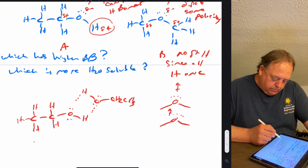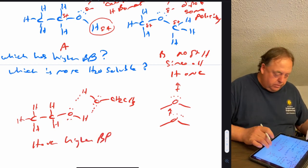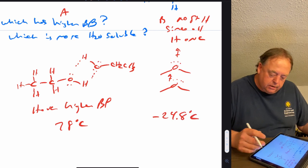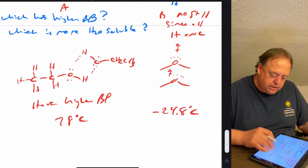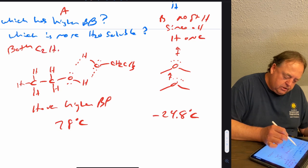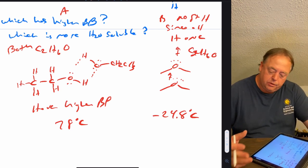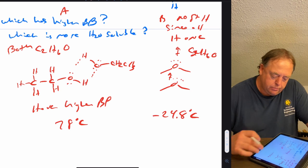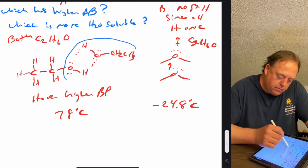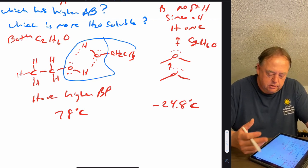Molecule A is going to have a higher boiling point. Its boiling point is 78°C, while molecule B is −24.8°C. These molecules are both C₂H₆O — same molar mass — so that's not going to affect boiling point. The only thing affecting boiling point is the intermolecular attractions. Hydrogen bonding has a huge effect on boiling point; as the strongest intermolecular attraction, it gives molecule A the higher boiling point.